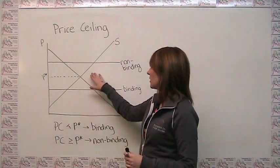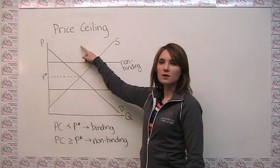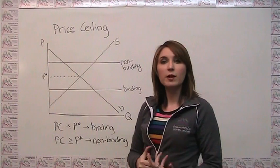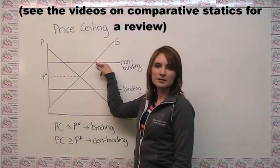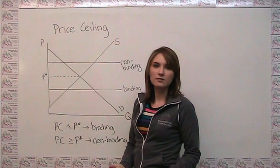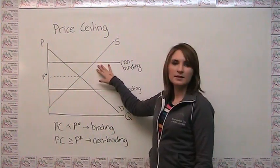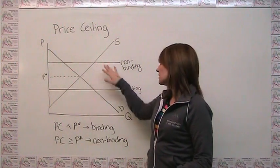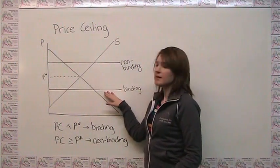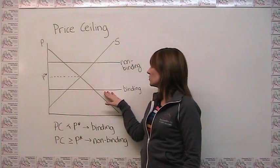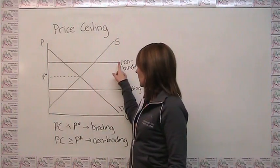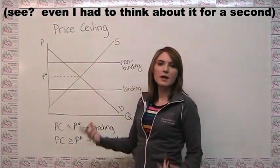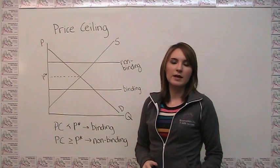Because if you think about it, you could have either an increase in demand or a decrease in supply that would push up the equilibrium price, in which case you might be bumping up against this non-binding price ceiling. So it's quite possible that a price ceiling that's non-binding today might actually be binding tomorrow. The opposite is also true - a price ceiling that's binding today could see either an increase in supply or a decrease in demand that could make it non-binding in the future.